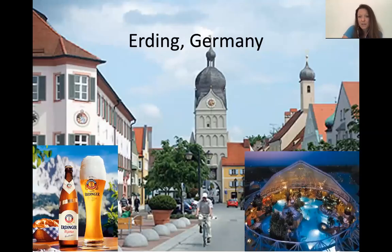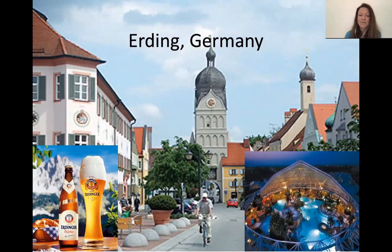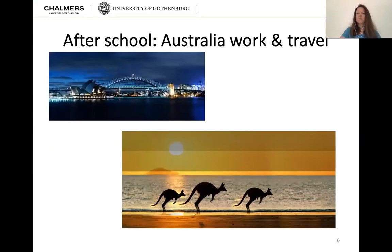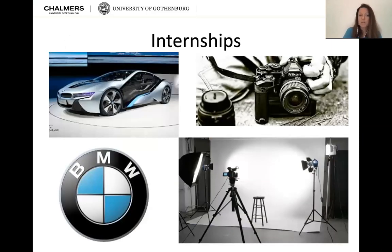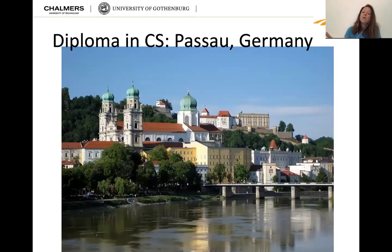I went to school in Erding, Germany, just a few kilometers from Musining. Erding is famous for white beer and a big thermal spa. After school, I went to Australia for work and travel — I sold books for three months and traveled around, which was pretty cool. Then I did two internships: one at BMW and one at a photography studio, because initially I wanted to go into communication design and study an arts major. But things came differently.